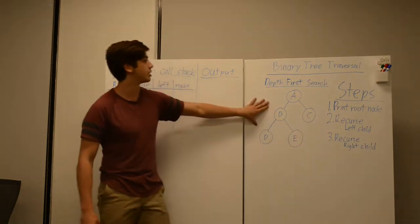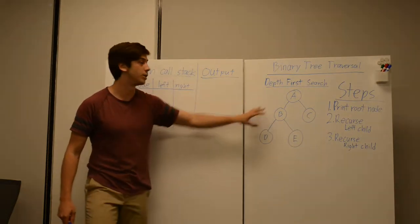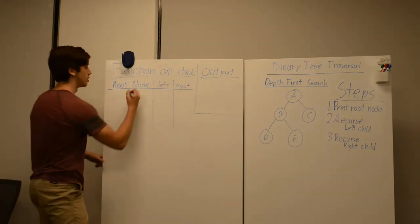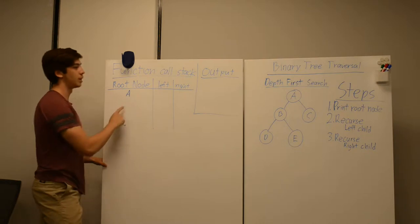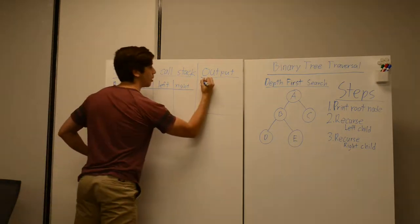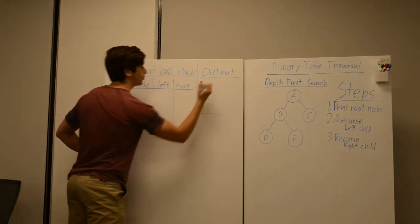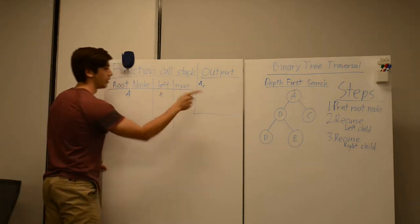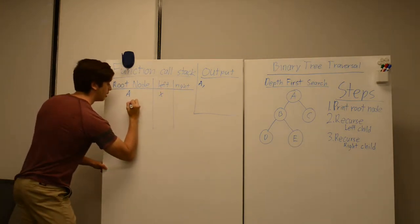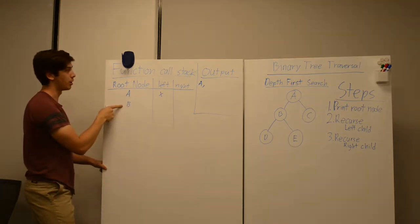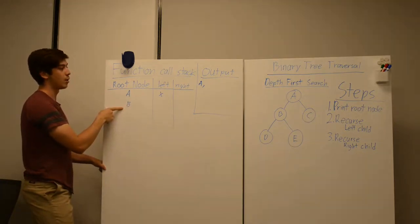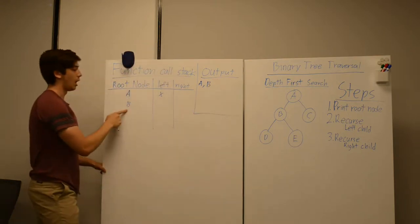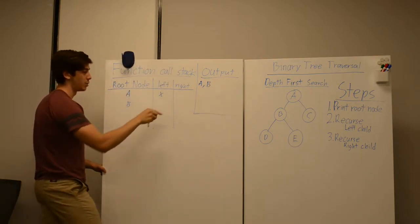Here's the example binary tree that I will be going through. We're going to start at the root node, which is A. We're going to print the root node to our output and recurse to the left child. So we're recursing to the left child of A, which is B. This is a new frame on the function call stack. Now we are going to print out B and then recurse to the left child of B, which is D.